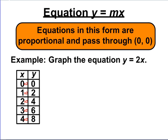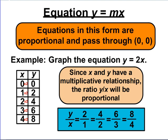One thing to notice about these ordered pairs is they all have a multiplicative relationship — you can get from x to y by multiplying by 2. That shows the ratios are proportional and the graph will pass through (0, 0). I'm going to show they're proportional by writing the ordered pairs as y over x fractions: 2 over 1, 4 over 2, 6 over 3, 8 over 4. Those fractions are all equal to each other — they all simplify down to 2 over 1. So when the equation is written in the form y equals mx, all of the ordered pairs are going to be proportional.